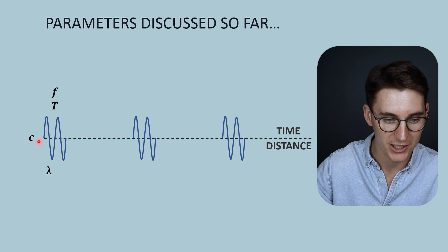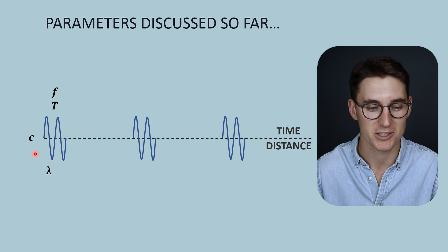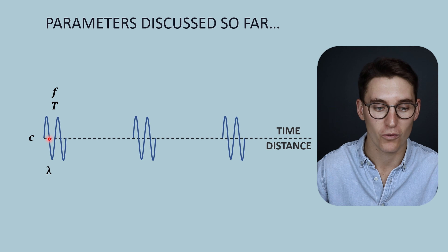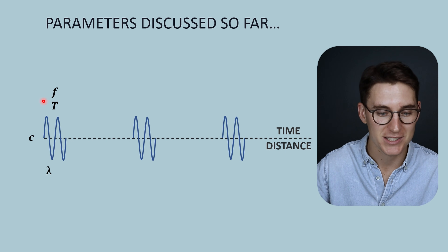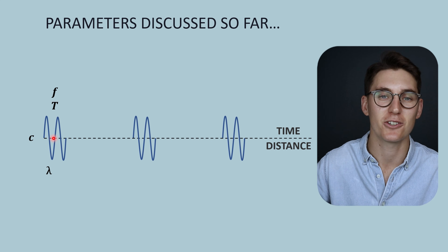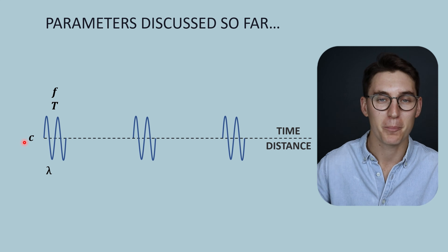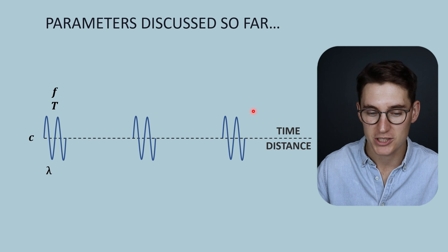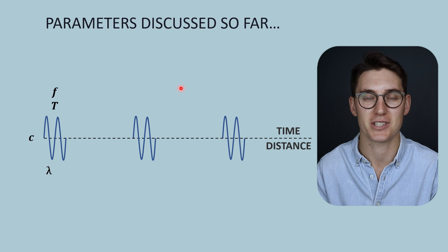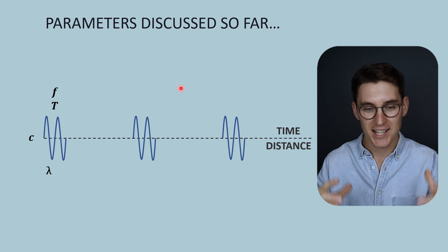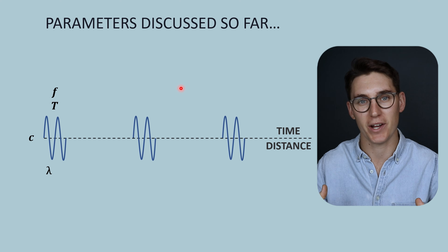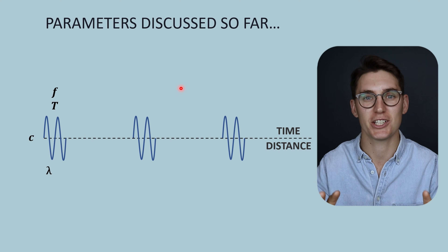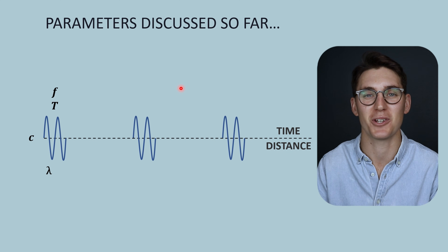We've discussed wavelength — the distance of one cycle in the wave; frequency — the number of wavelengths that pass a particular point in a given period of time; period — the time taken for one cycle to pass a particular point; and speed — meters per second, distance per time. In our next talk we're going to discuss sound intensity, looking at the amplitude of the wave and how that affects the intensity, the amount of power emitted into a tissue in a given area. I'll see you all in that talk.